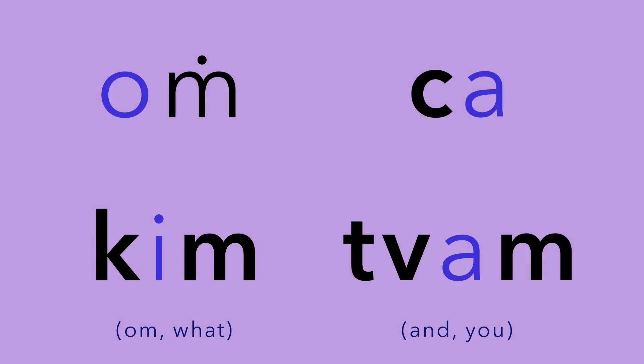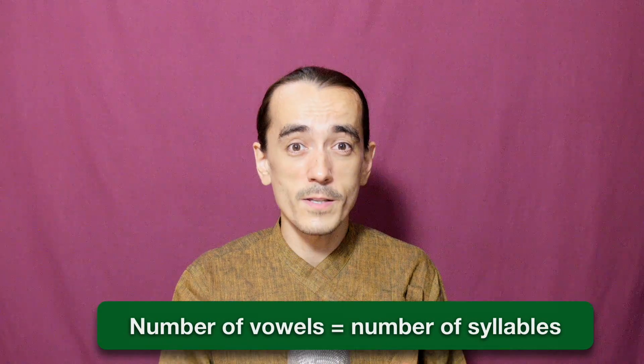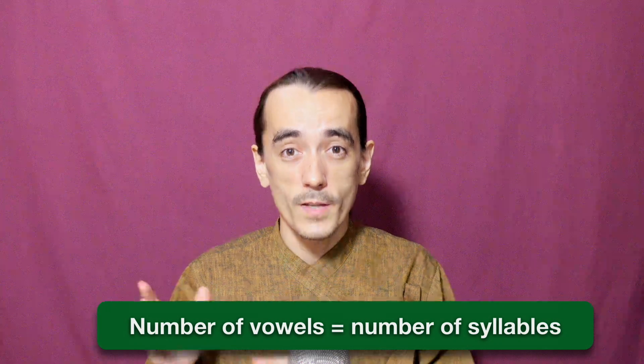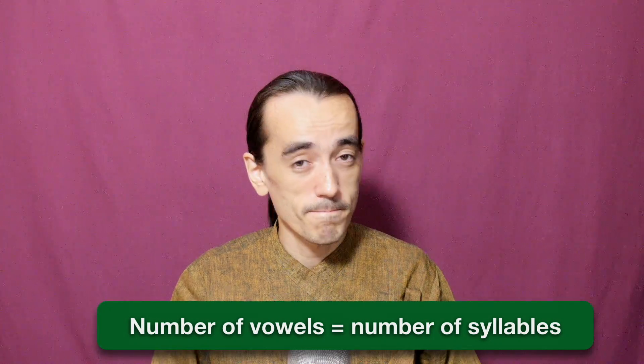So let's finally turn to Sanskrit. Can you think of a Sanskrit word consisting of a single syllable? Let me show you a few: Om, cha, kim, tvam. Notice that tvam has two consonants in front and one at the end, so a syllable can have more than one consonant. Here's your really easy formula: the number of vowels in the word equals the number of its syllables. That's all.